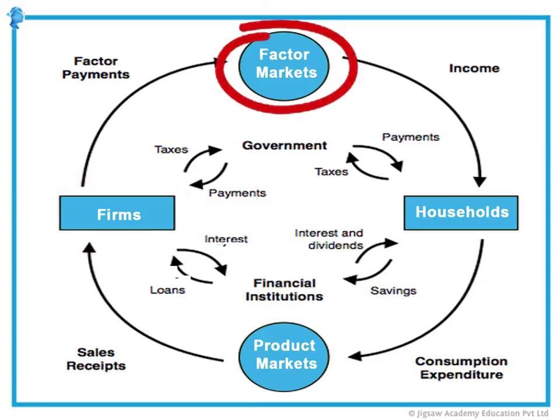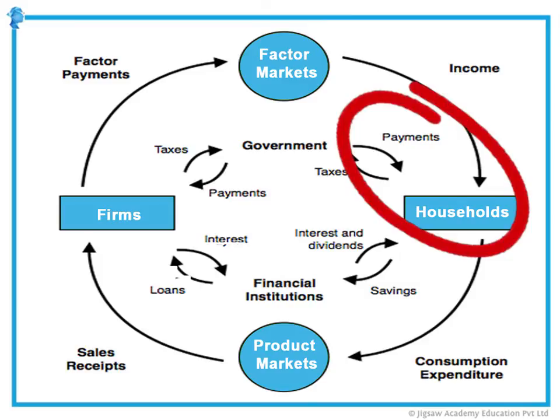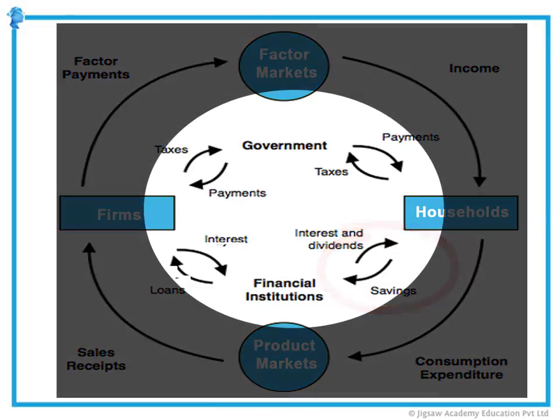These farms and companies, in turn, go to the factor market to purchase labor, land, raw materials, etc. Now, who is part of the factor market? It's all of us — householders are part of the factor market, and it is where we get our payment from. Any savings we have, we store in banks and financial institutions. Thus, the same money circulates within so many entities.